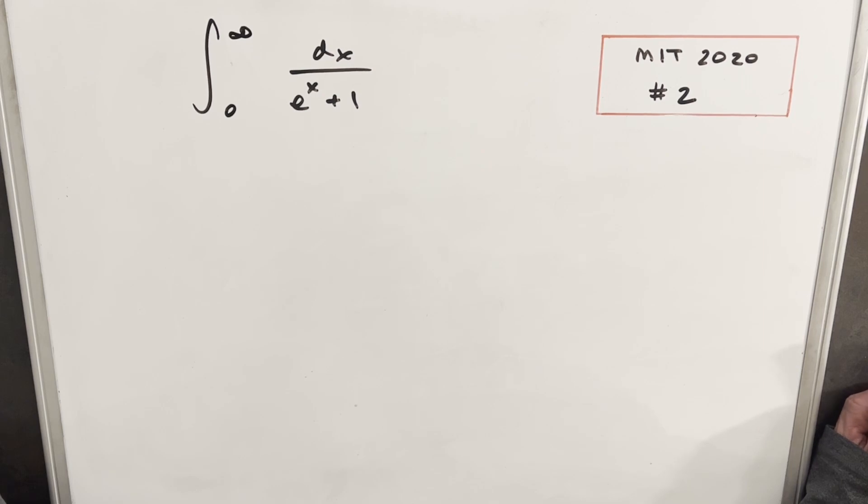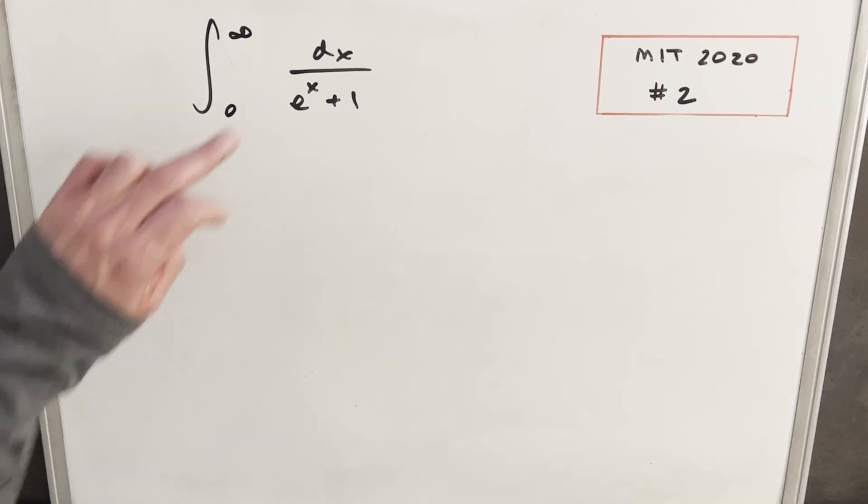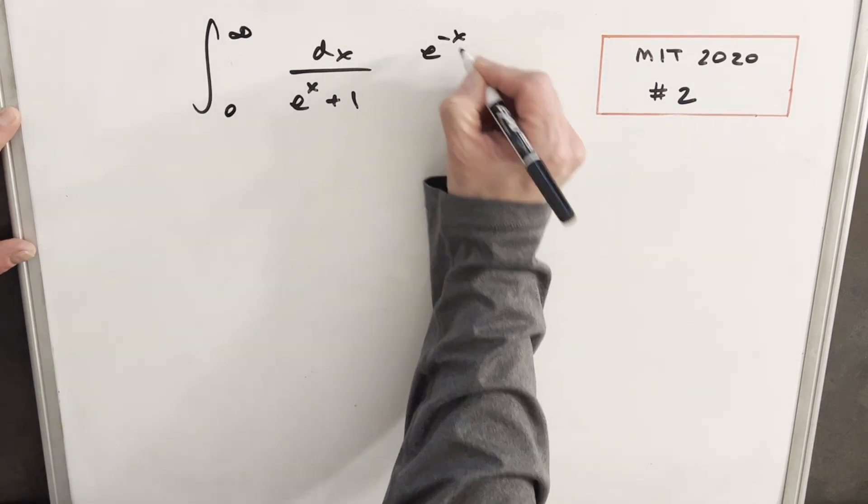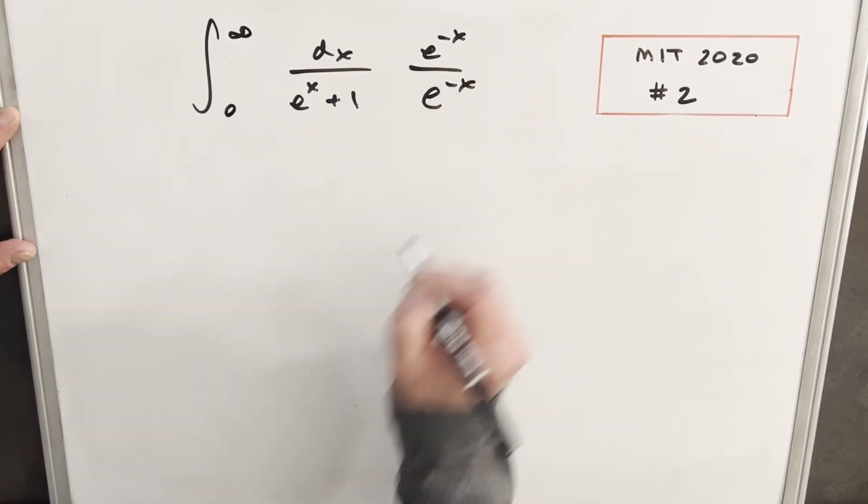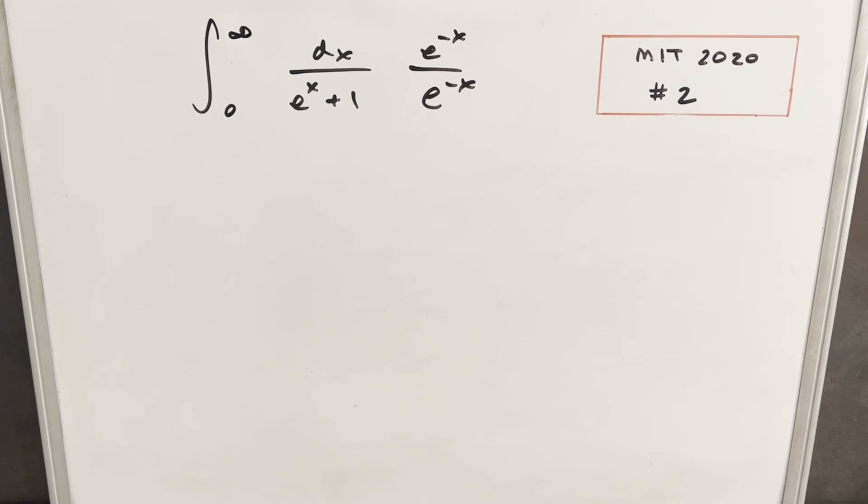I think what I want to do is try for a u substitution. We have the nice property that the derivative of e to the x is just e to the x. It'd be really nice if I had something in the numerator. What I can do is just kind of create that. What we'll do is we'll multiply top and bottom by e to the minus x over e to the minus x.